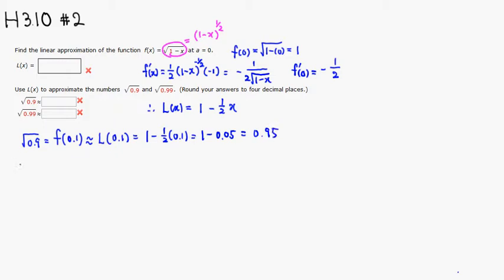And how about the square root of 0.99, which is exactly the same thing as f of 0.01, which can be approximated by L of 0.01. Which is going to be 1 minus 1 half times 0.01, which is 1 minus 0.005, which is going to be 0.995.